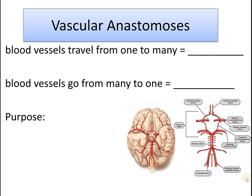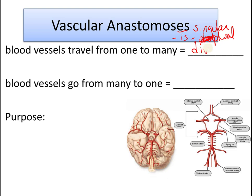An anastomosis — anastomoses with an ES is singular, and if we add an IS to it, it would be plural. An anastomosis is when blood vessels travel from one to many, meaning they diverge, or they could go from many to one, meaning they converge.